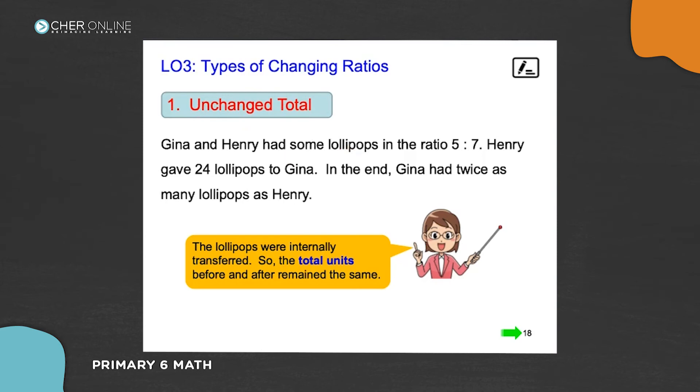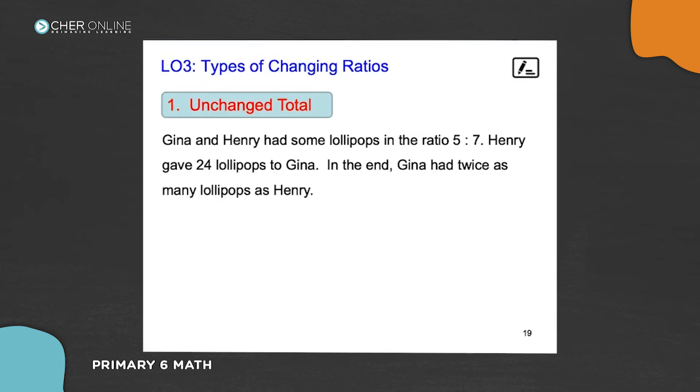So, how do we solve questions like this? What we do is, we write down the ratio for Gina and Henry. Since we know total is unchanged, we need to have the total ratio coming out. So, five to seven, total is 12 units. Then, because Henry is the one who gave 24 to Gina, Gina will plus 24 lollipops. Henry will minus 24. In the end, Gina had twice as many as Henry. So, twice as many means two to one. And the total becomes three.